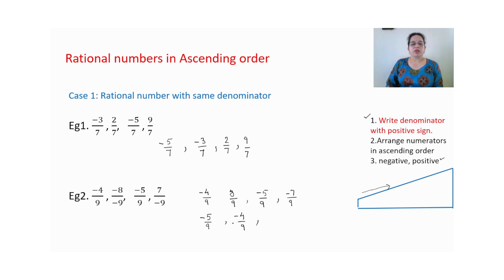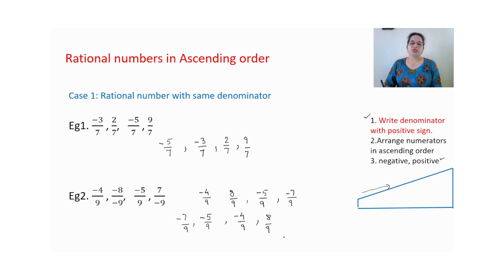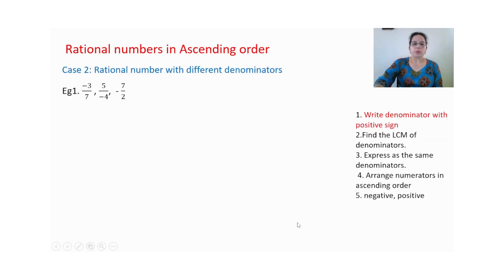There is one more negative number — minus 7 upon 9 should come first, since it is the smallest. Then comes minus 5 upon 9, then minus 4 upon 9. Only one positive number remains, which is 8 upon 9. So this is the answer.